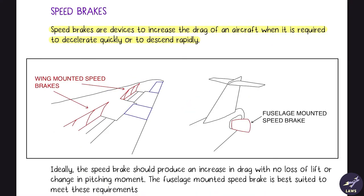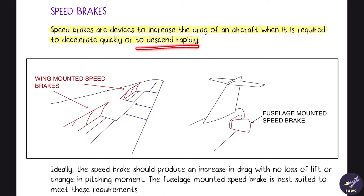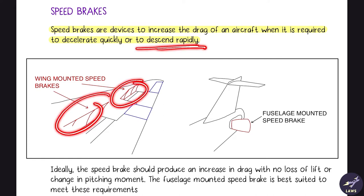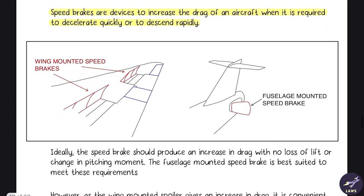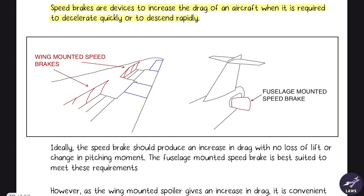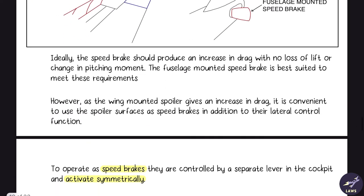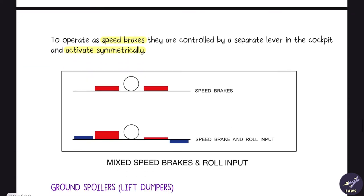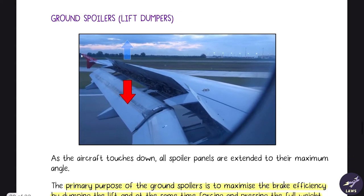Next, spoilers can be used as speed brakes. They are used to increase the drag of an aircraft when it is required to decelerate quickly or to descend rapidly. In this case, the speed brakes on both sides are deployed symmetrically. In some aircraft you'll also see fuselage-mounted speed brakes.